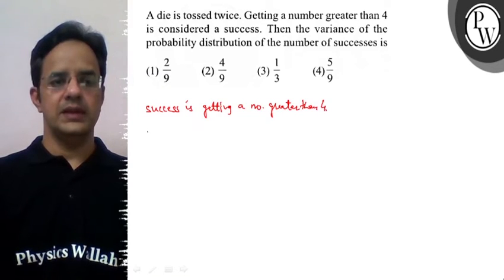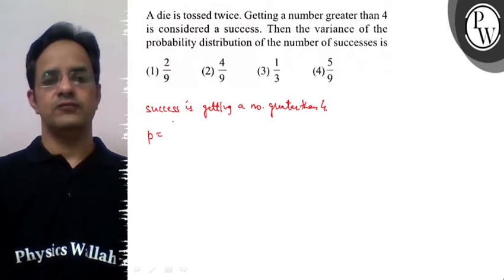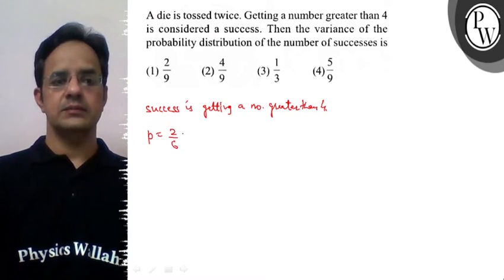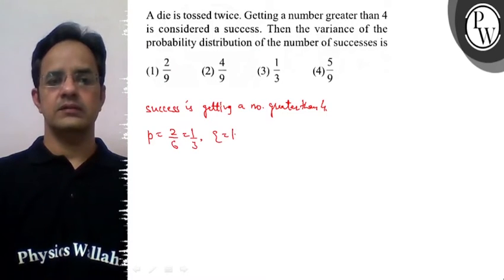So the probability of success will be: numbers greater than 4 on the dice are 5 and 6. So the probability will be 2 by 6, which means it is 1 by 3. And so the probability of failure, which is 1 minus p, will be 2 by 3.